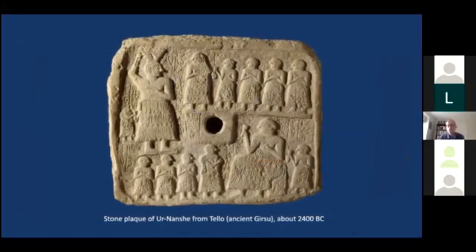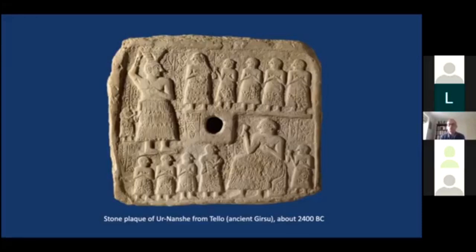From ancient Girsu — modern Tello — this stone plaque intended for a temple, covered in cuneiform writing, tells us it was dedicated by a king called Ur-Nanshe. You can see the hole in the centre which allowed a nail to fix it to the wall. Ur-Nanshe is shown on the plaque twice: first as the largest figure on the left, carrying a basket of soil on his head while undertaking the ritual of making the first brick from which the temple would be built; and then in the lower register, seated and holding a cup in celebration of the temple having been completed. Kings now take on the responsibility of building for the gods, and the visual imagery reflects that.